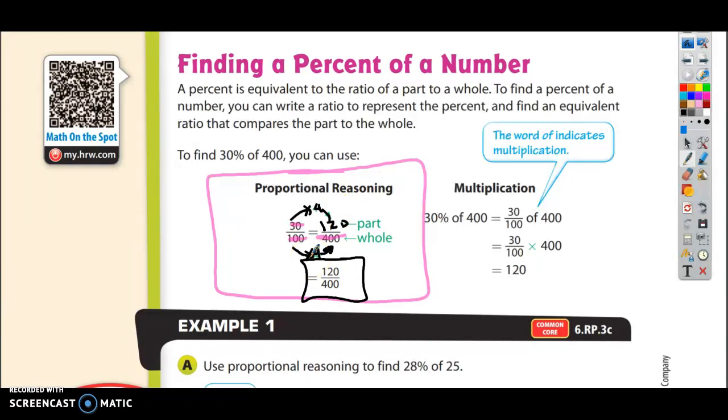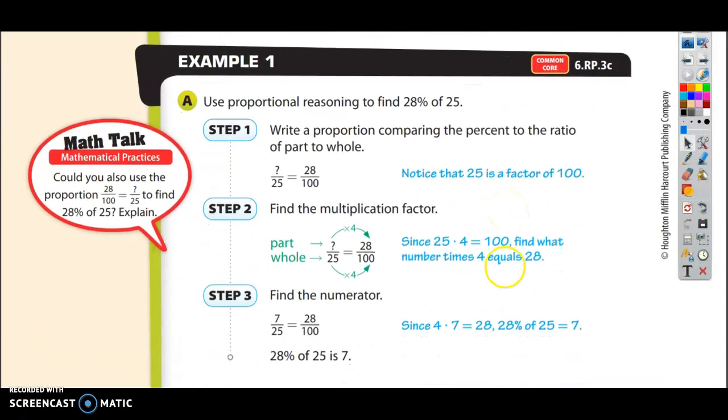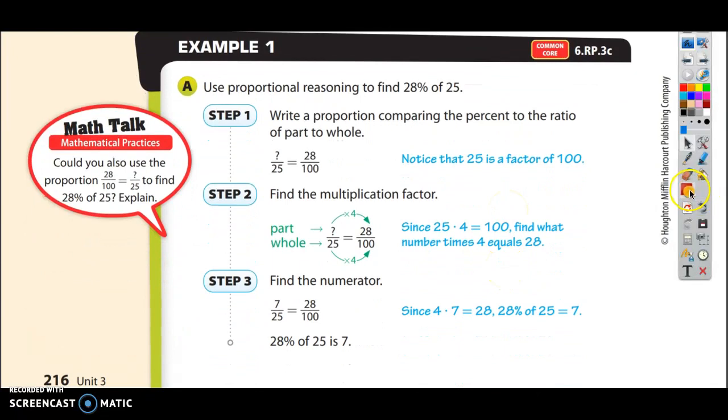There's another way to do it. It's called multiplication. I'm going to show you later on when we would use proportional reasoning and when we would use multiplication. Example 1 they show you proportional reasoning. And I'm actually going to read this with you. And then I'll show you why you would want to use proportional reasoning. Part A reads, use proportional reasoning to find 28% of 25. So here's the problem right here. 28% of 25.